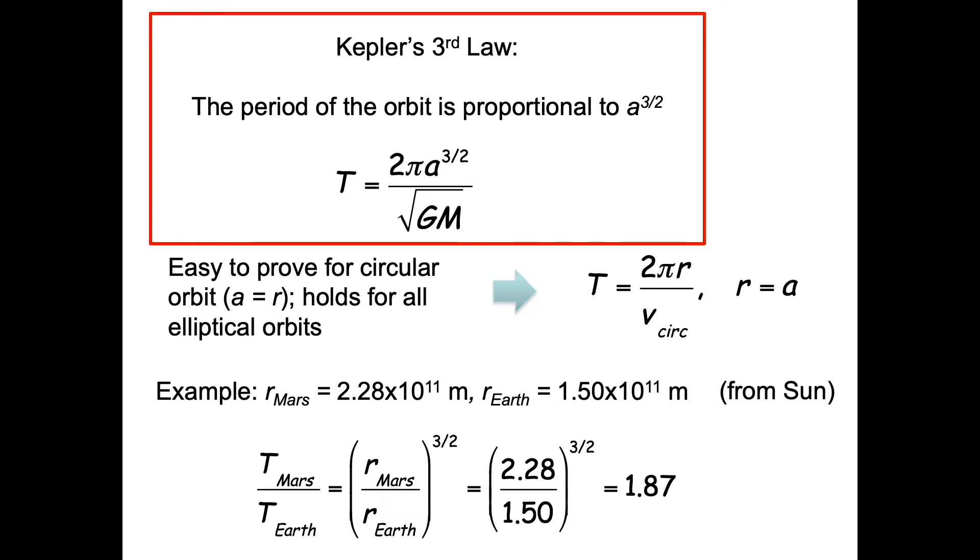For example, R Mars is equal to 2.28 times 10 to the 11th meters, and Earth is 1.5 times 10 to the 11th meters from the sun. If we want to know the difference between the periods, we can take R Mars over R Earth to the 3/2 power, and we get 1.87. A Martian year is pretty close to twice an Earth year.